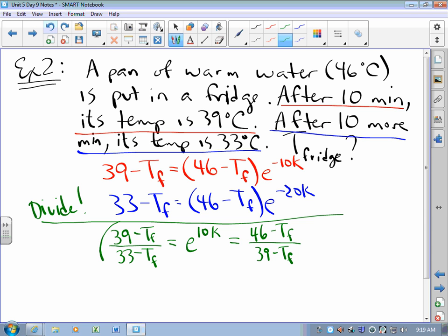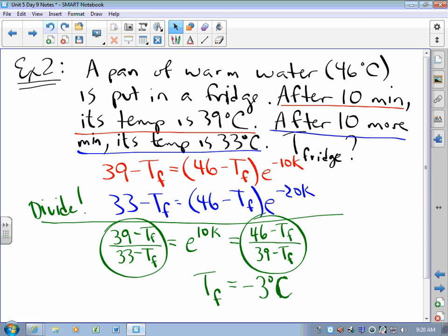And so now what I have is one equation, those two things are equal, one equation, one variable. My calculator does that for me and I get that the temperature of the refrigerator is -3 Celsius. Calculator does the work for me.